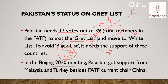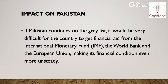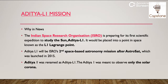In the Beijing 2020 meeting, Pakistan got support from Malaysia and Turkey, besides FATF current chair China. Toh Malaysia aur Turkey ne bhi inko support kiya tha. Ab agar iska impact Pakistan pe dekhein, toh ye hoga ki agar Pakistan grey list mein continue karega, toh inke liye bahut badi difficulty hogi ki ye financial aid le sake — IMF, World Bank aur European Union jaise banks se. And this will make their financial conditions aur zyada unsteady aur worse ho jaayengi. So this is the impact on Pakistan.